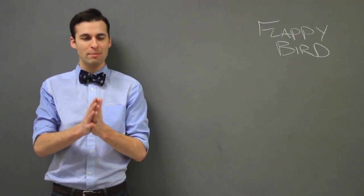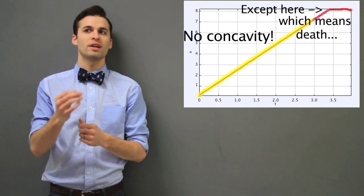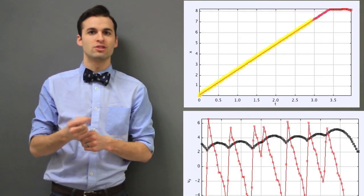Now, here's what's strange. Flappy Bird has a constant X velocity. But he has an ever-changing Y velocity.